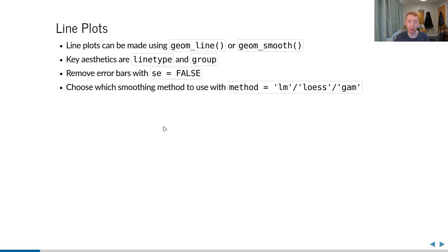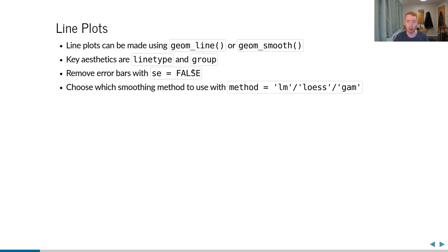We closed off last session with a quick look at line plots, using geom_line() and geom_smooth() to create either straight or smooth line plots. These introduced two new aesthetics: linetype and group. For geom_smooth(), we saw the se property, which can be set to false to remove the standard error bars — the shaded areas showing uncertainty. In the homework we also saw how to choose different smoothing methods using method equals, ranging from lm for a linear model to a generalized additive model.